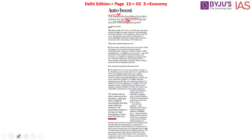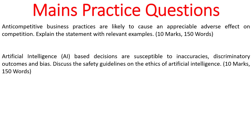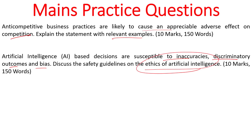Now let's look into the main practice questions. First: Anti-competitive business practices are likely to cause an appreciable adverse effect on competition — explain the statement with relevant examples. Second: Artificial intelligence based decisions are susceptible to inaccuracies, discriminatory outcomes and bias — discuss the safety guidelines on the ethics of artificial intelligence. Please write your answers in the comment section for peer review, and give positive feedback to your friends' answers. Thank you for watching. All the best.